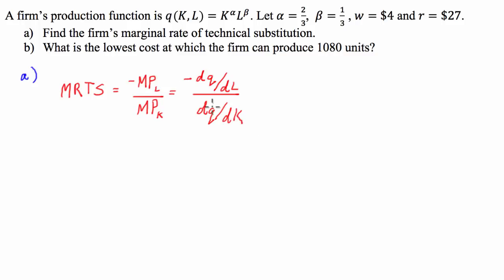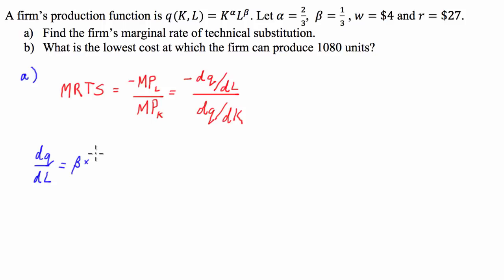As the relationship suggests, we're going to have to find both derivatives of the production function — with respect to labour as well as with respect to capital. So let's start with the derivative of Q with respect to labour. This is going to be equal to beta times K to the alpha times L to the beta minus 1.